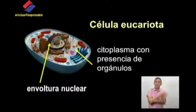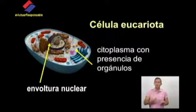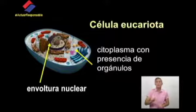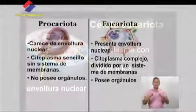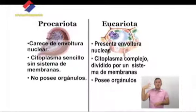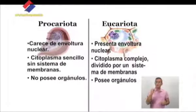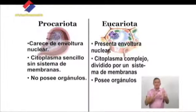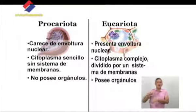En la célula eucariota encontramos presencia de orgánulos en el citoplasma, como pueden ser las mitocondrias y las vacuolas en ambas células eucariotas, y los plastidios, donde encontramos los cloroplastos verdes en el caso de las plantas, por los cuales realizan la fotosíntesis. Por tanto, podemos concluir que la célula procariota carece de envoltura nuclear, tiene un citoplasma sencillo sin sistema de membranas y no posee orgánulos. A diferencia de la célula eucariota, que sí presenta una envoltura nuclear con un núcleo bien definido, un citoplasma complejo dividido por un sistema de membranas y con presencia de orgánulos.